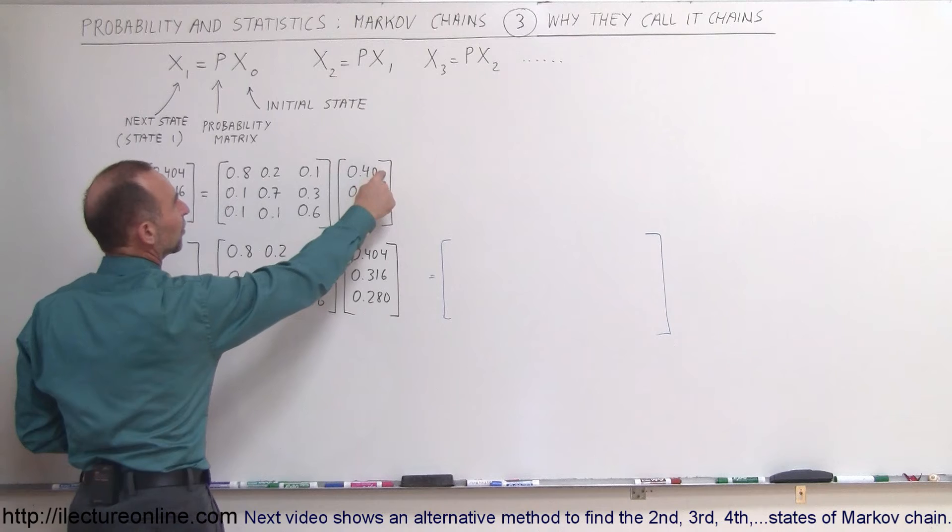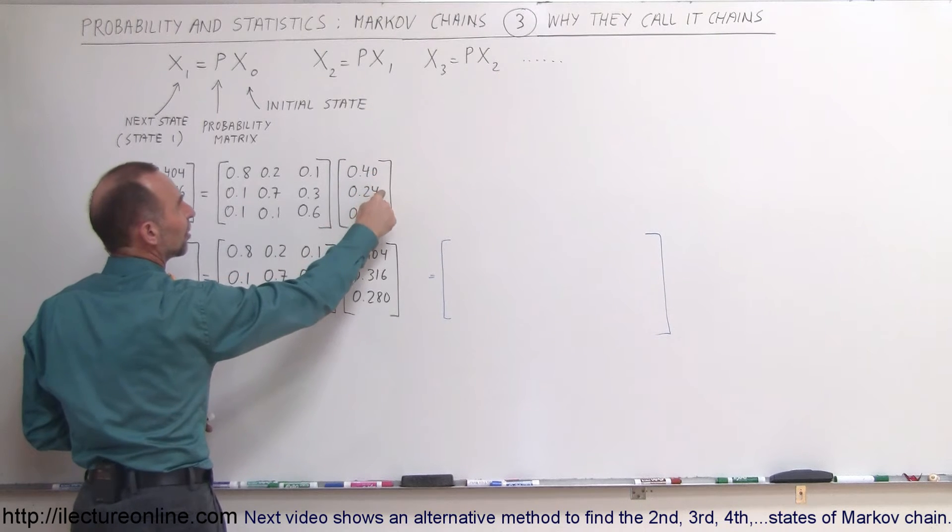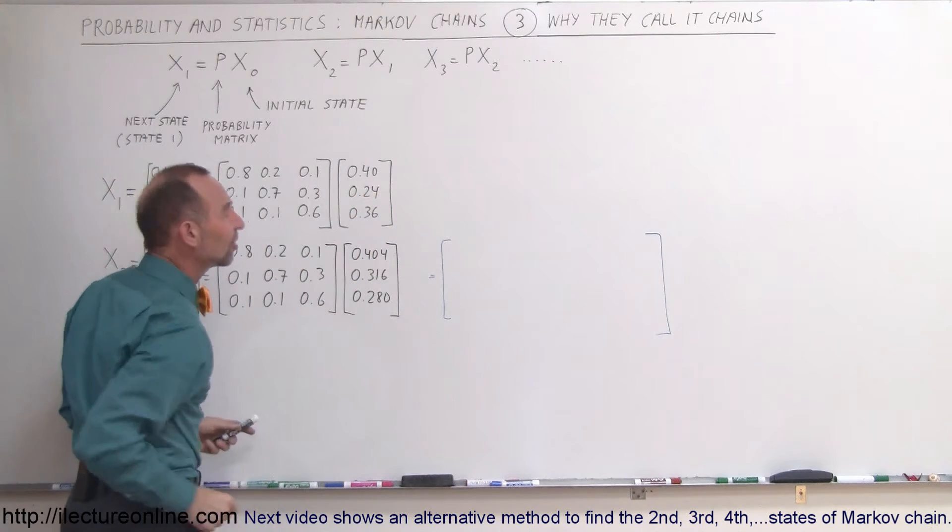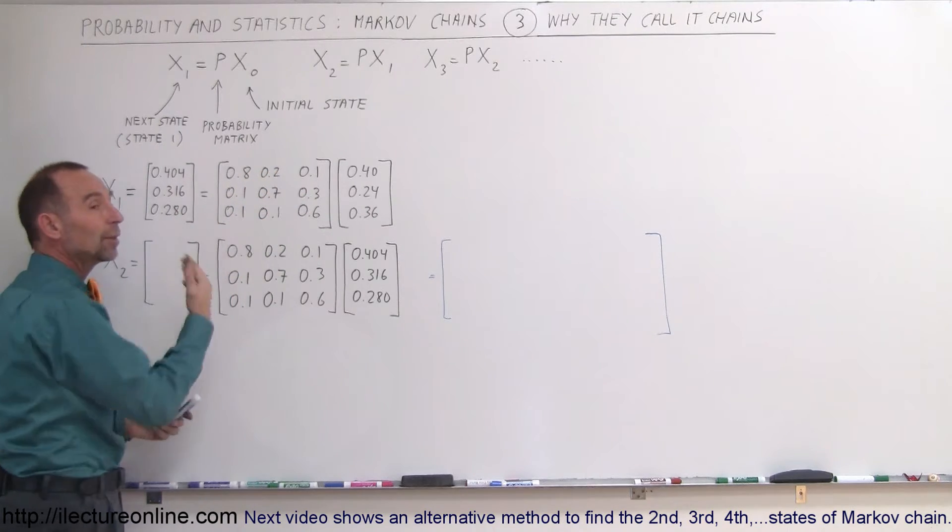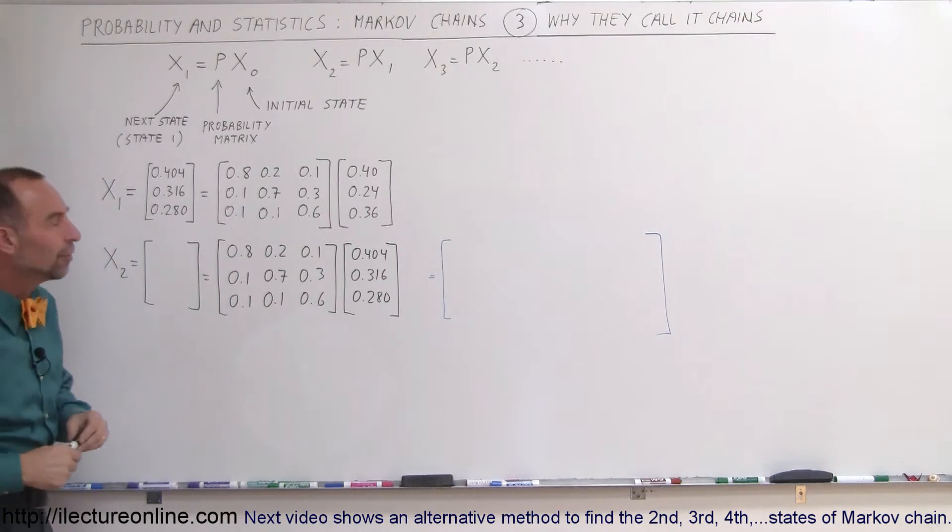So we have the initial state: 40% going to store A, 24% of people going to store B, and 36% of people going to store C, and this was the probability matrix of where we thought customers would go the following week.